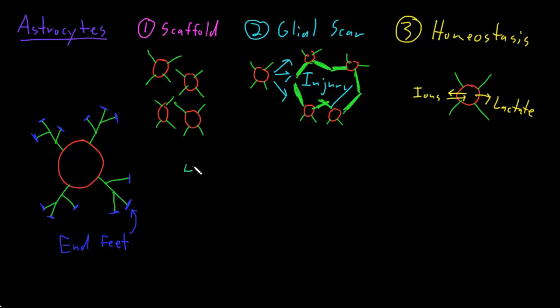Another function of astrocytes is contributing to something we call the blood-brain barrier. This is a barrier that prevents large molecules in the bloodstream—I'll just draw a little blood vessel passing through the central nervous system—this prevents large molecules from leaving the blood to enter the central nervous system, unless the cells actually want that large molecule to enter.